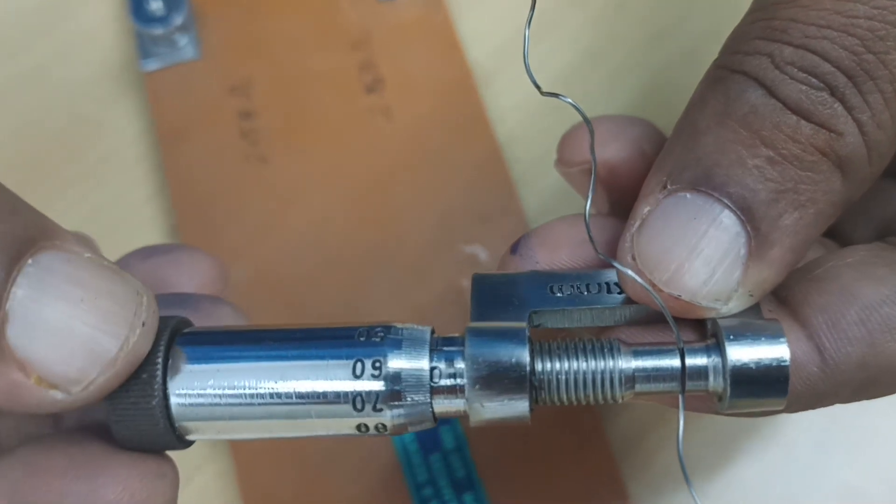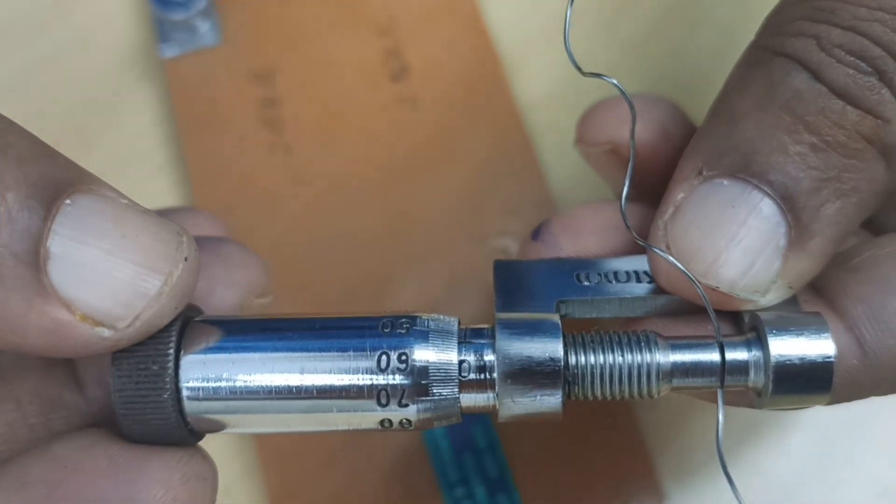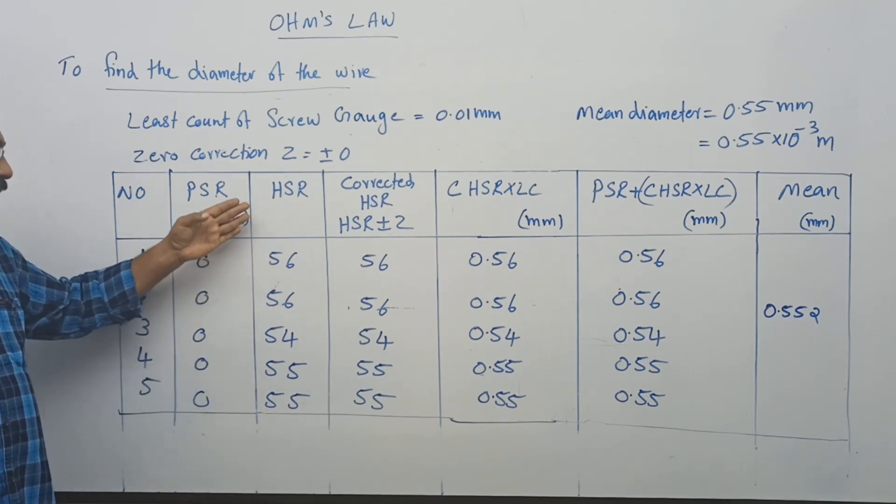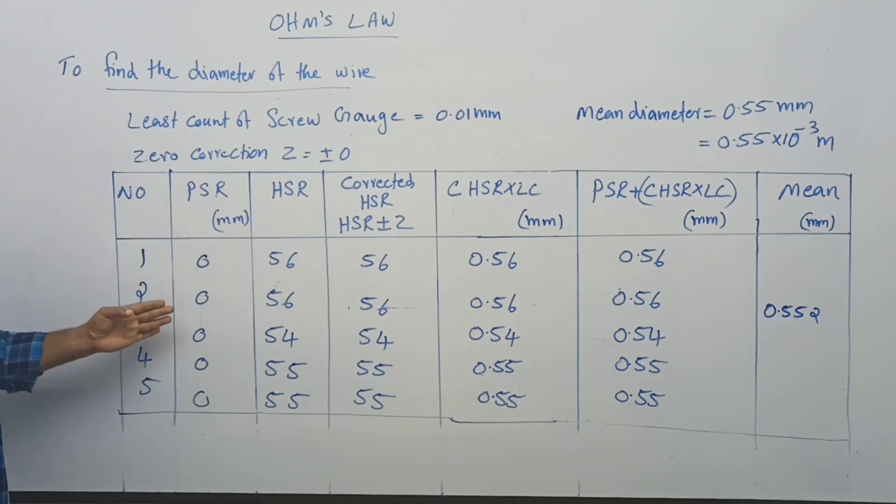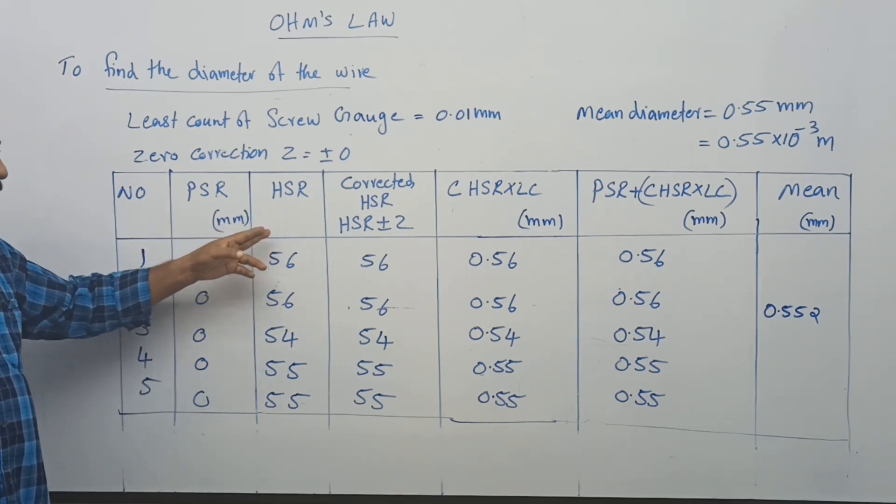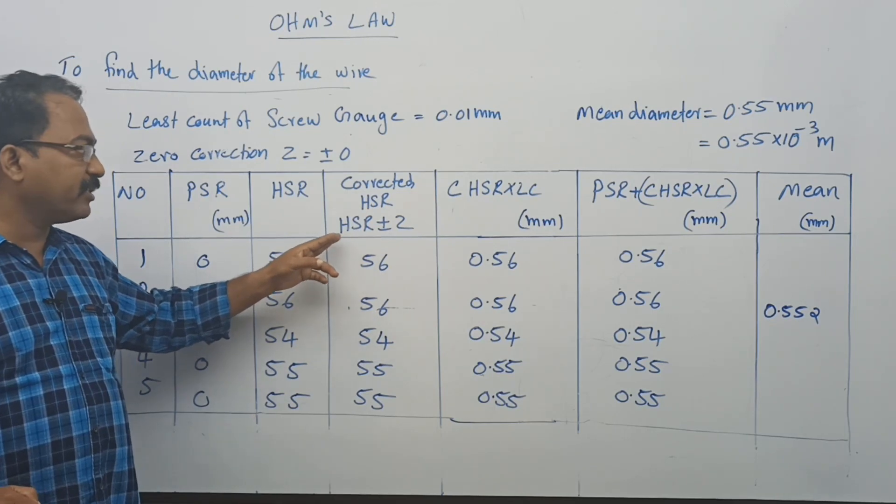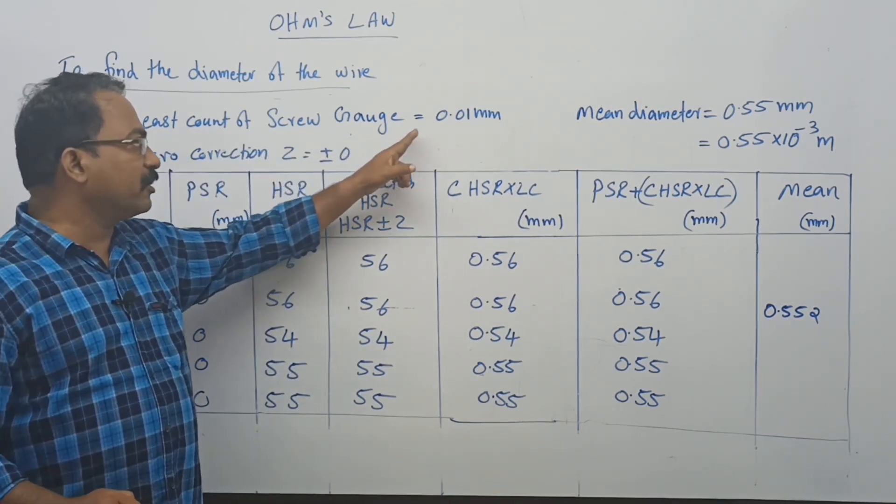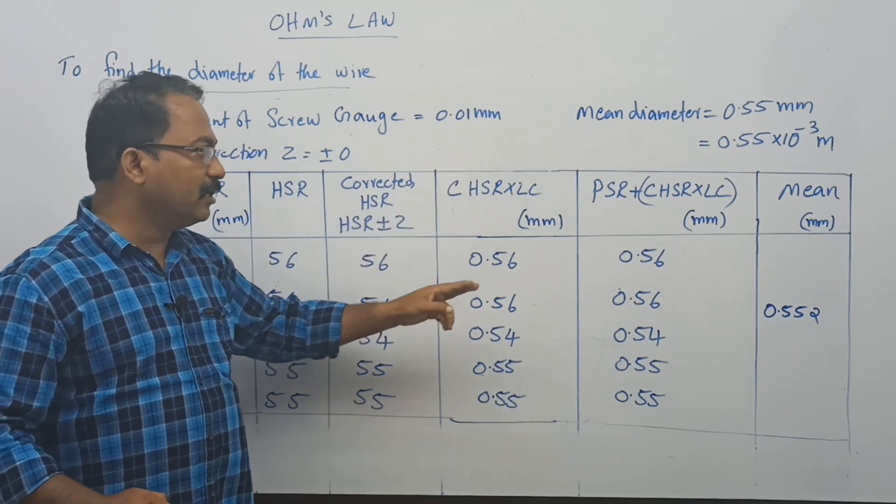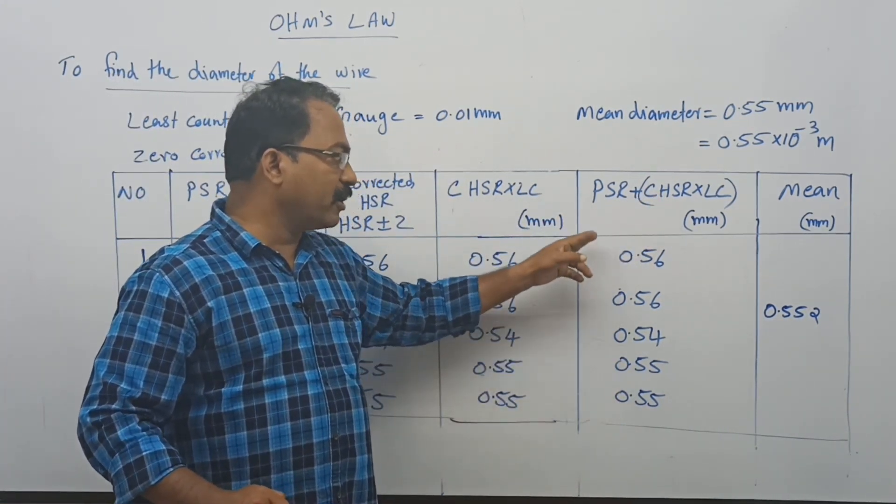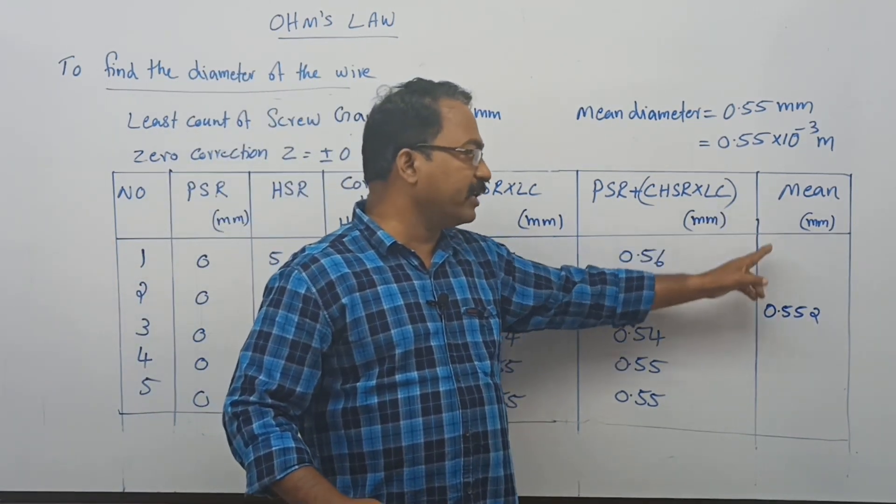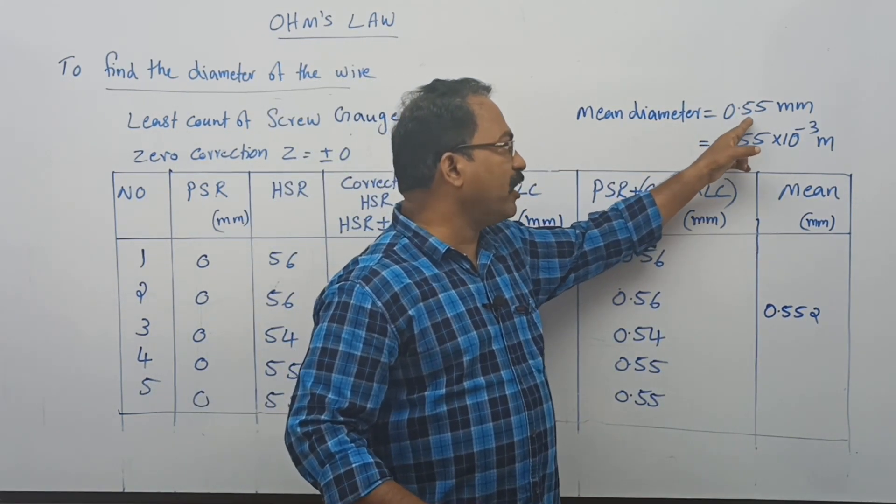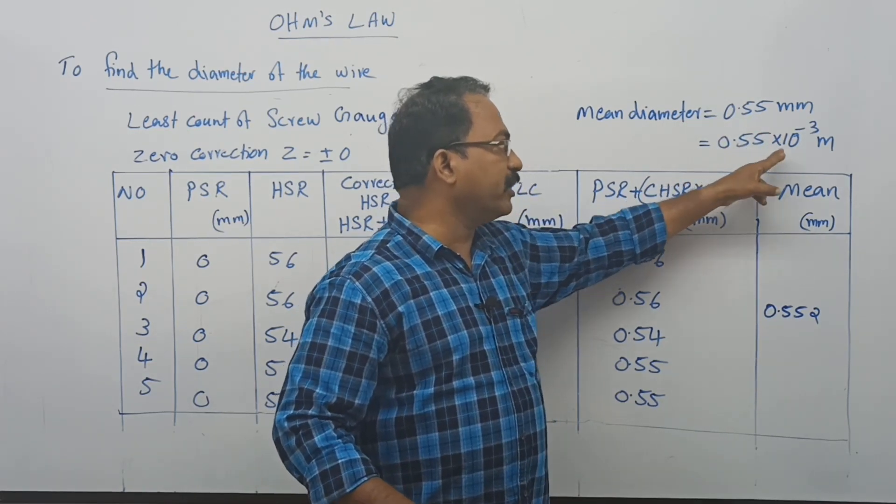Placing the wire in the screw gauge, I am taking readings. I am taking 5 readings and marking them in the tabular column. The zero correction is 0 and different HSRs are here. All the PSRs are 0. PSR means pitch scale reading, HSR means head scale reading, and corrected HSR means HSR ± zero correction. The LC or least count of this screw gauge is 0.01 mm, and PSR plus corrected HSR is taken. Finally, the mean of the reading is 0.552 mm. That means mean diameter of the wire = 0.55 mm or 0.55 × 10^-3 meter.